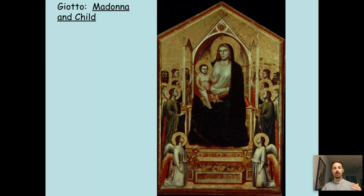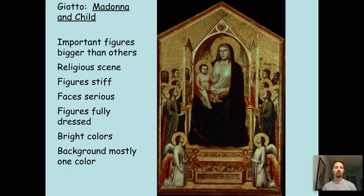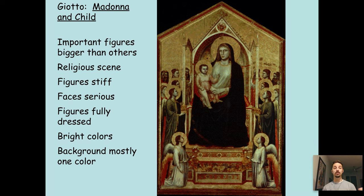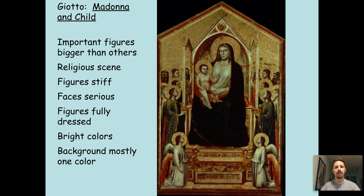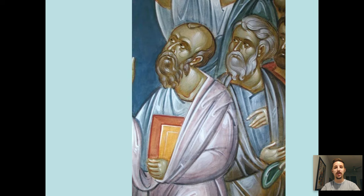So now we are going to look at Giotto's Madonna and the Child. These are, again, examples where important figures are bigger than others, it's a religious scene, the figures are stiff, faces are serious, figures are fully dressed, bright colors, and the background is mostly one color. Typical medieval artwork.